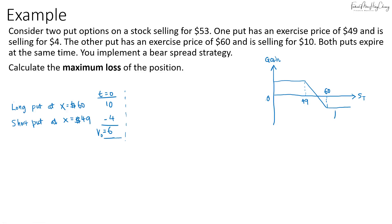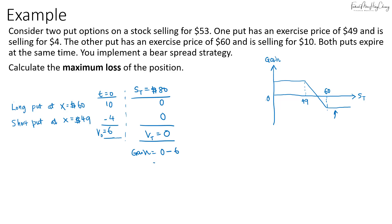The loss is maximum when the spot price is higher than the upper strike price of $60. For example, if the price is $80, both options would not be in the money, so you cannot exercise them — both are zero. The value of the bear spread strategy is zero. So the gain is zero minus $6, giving a maximum loss of $6.